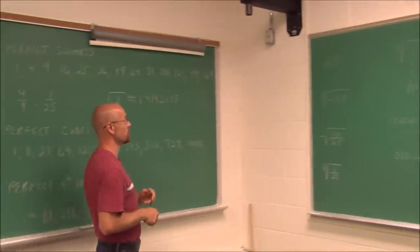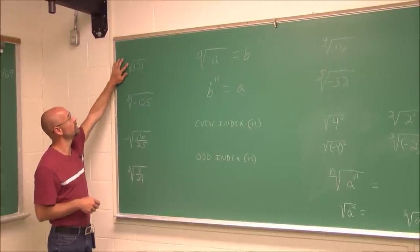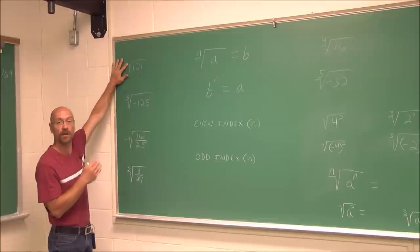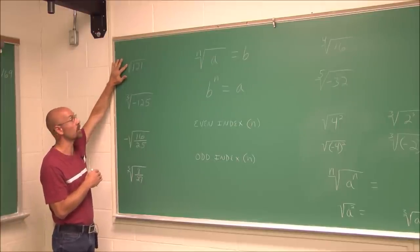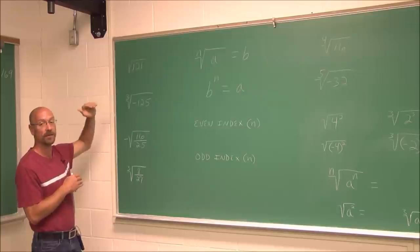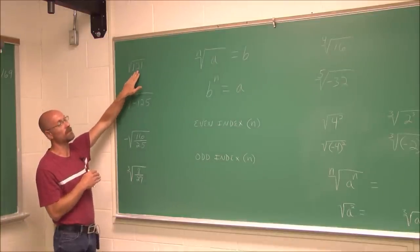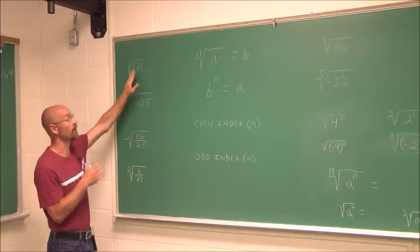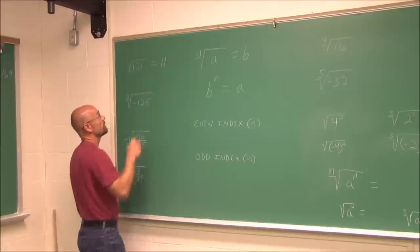Let's look at some examples. Here I have the square root of 121. When there is no number shown for the index, we assume it is a square root — an index of 2, the lowest radical we can have. What number times itself is 121? I recognize 121 to be a perfect square of 11, since 11 times 11 is 121. So the square root of 121 is 11.